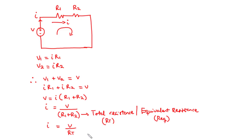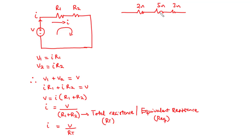If two or more resistors are in series, we can combine them by summing the individual resistors. For example, if we have three resistors connected in series — 2 ohms, 5 ohms, and 3 ohms — then the equivalent resistance REQ equals 2 plus 5 plus 3, which equals 10 ohms.